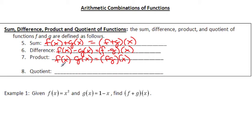And then the quotient is the two divided. So f divided by g. And again, in division order matters. And we can also write that as (f/g)(x).